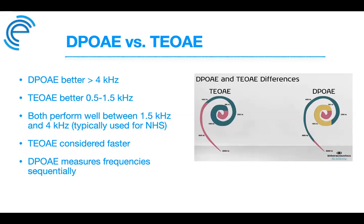A disadvantage of TEOAEs is that they are only effective above approximately 4000–5000 Hz because they are measured post-stimulus — a residual stimulus may remain in the ear canal for several milliseconds, making it harder to detect low-frequency cochlear activity. DPOAEs can go up to 10,000 or even 16,000 Hz in some studies. For newborn hearing screening, both use a range of 1500 to 4000 Hz, and both have the same high sensitivity and specificity for detecting outer hair cell dysfunction.